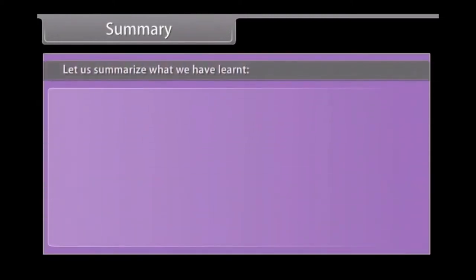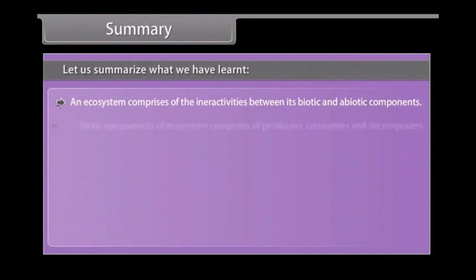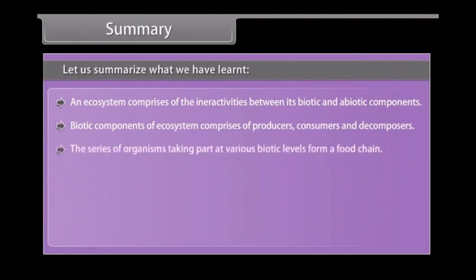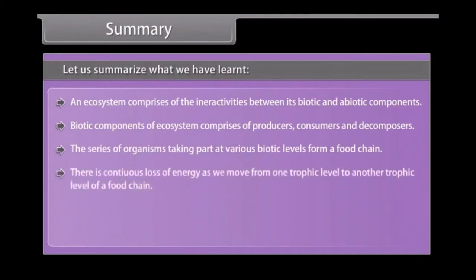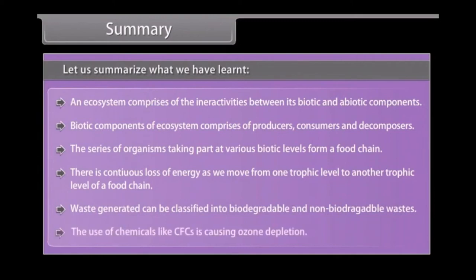Summary. Let us summarize what we have learnt. An ecosystem comprises of the interactivities between its biotic and abiotic components. Biotic components of ecosystem comprises of producers, consumers and decomposers. The series of organisms taking part at various biotic levels form a food chain. There is continuous loss of energy as we move from one trophic level to another trophic level of a food chain. Waste generated can be classified into biodegradable and non-biodegradable wastes. The use of chemicals like CFCs is causing ozone depletion.